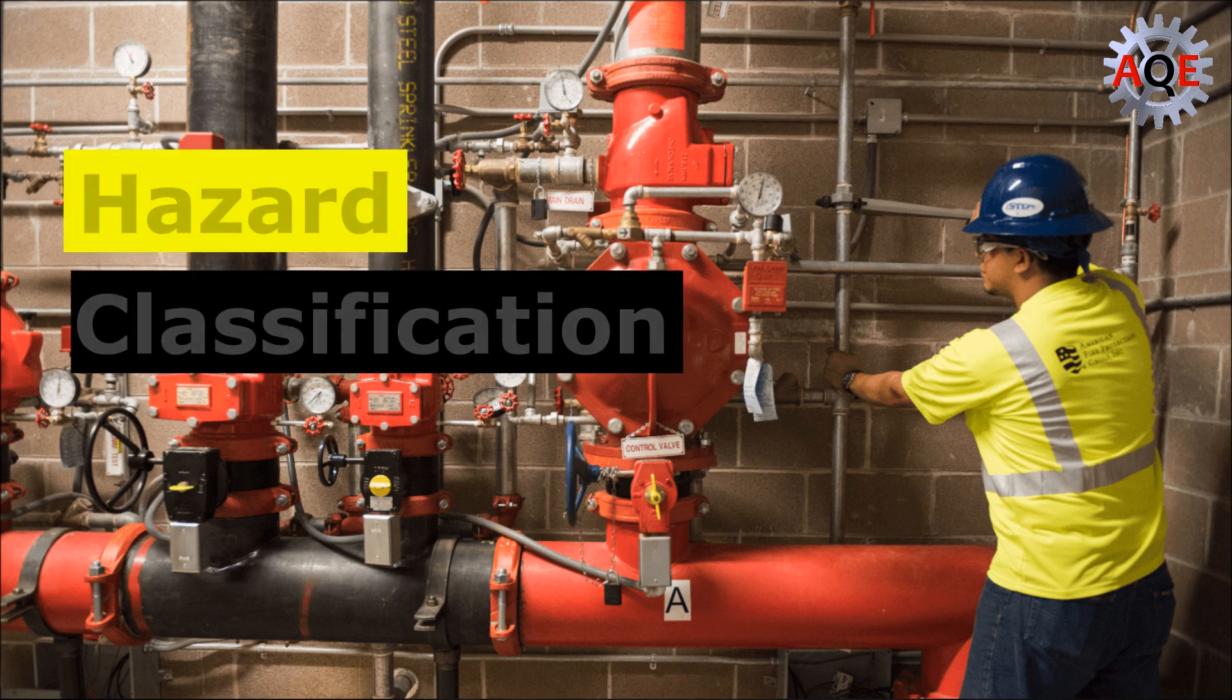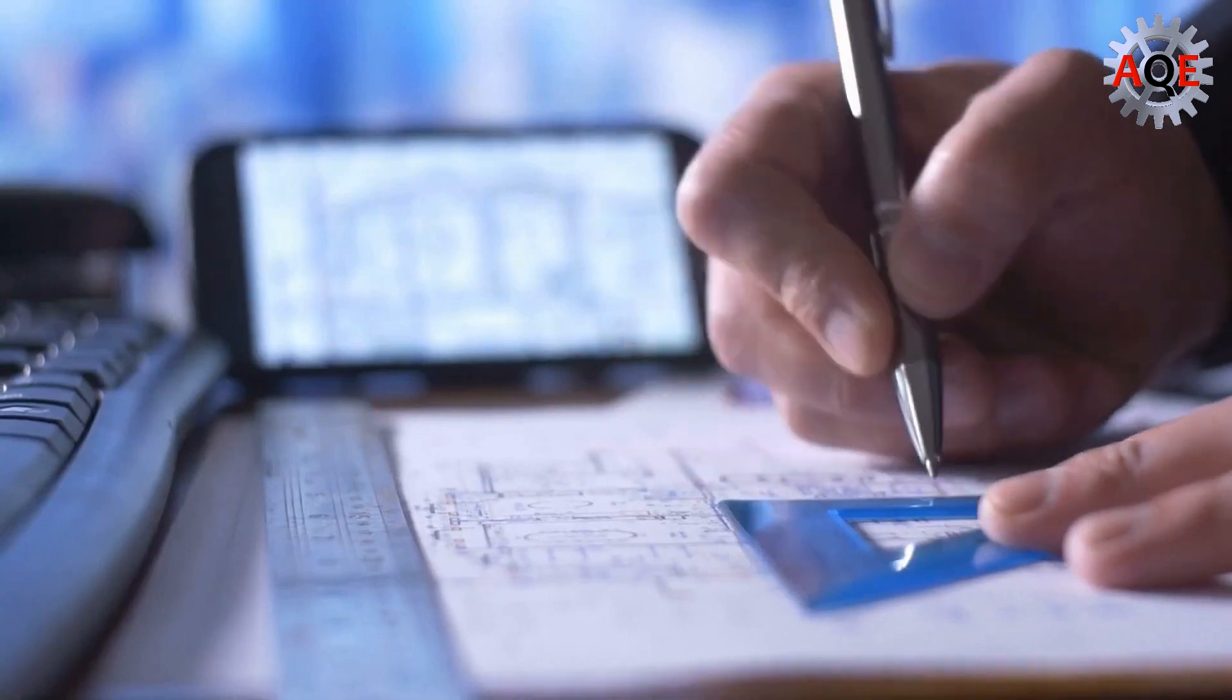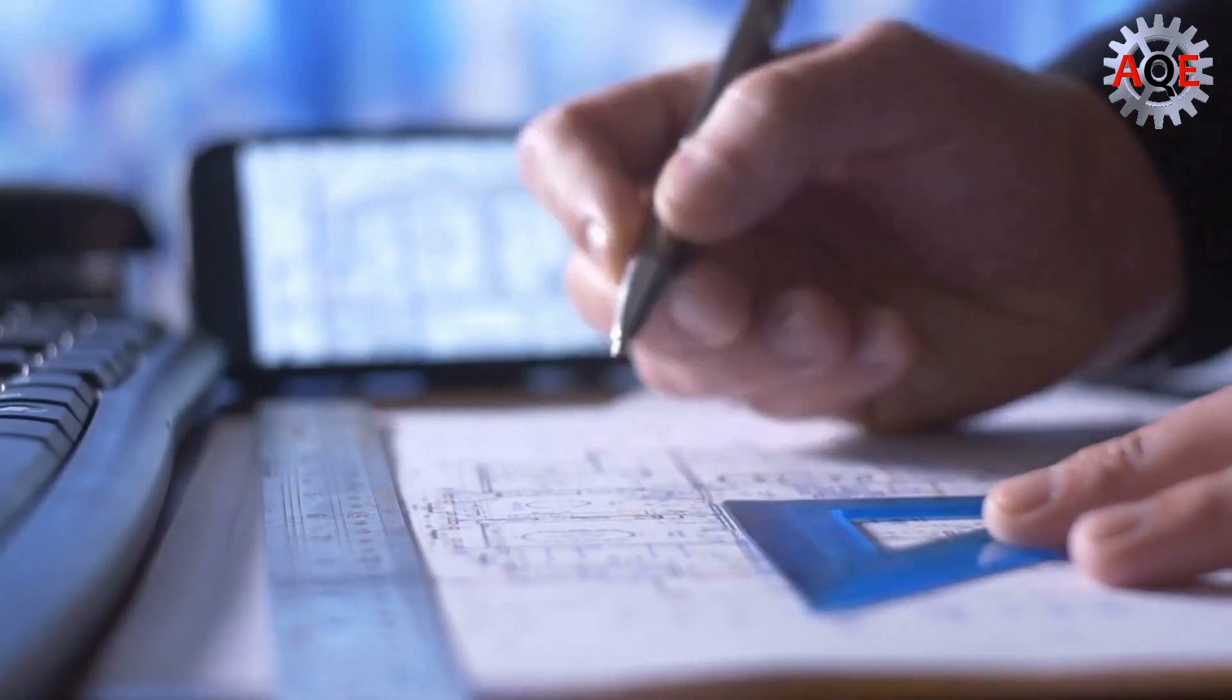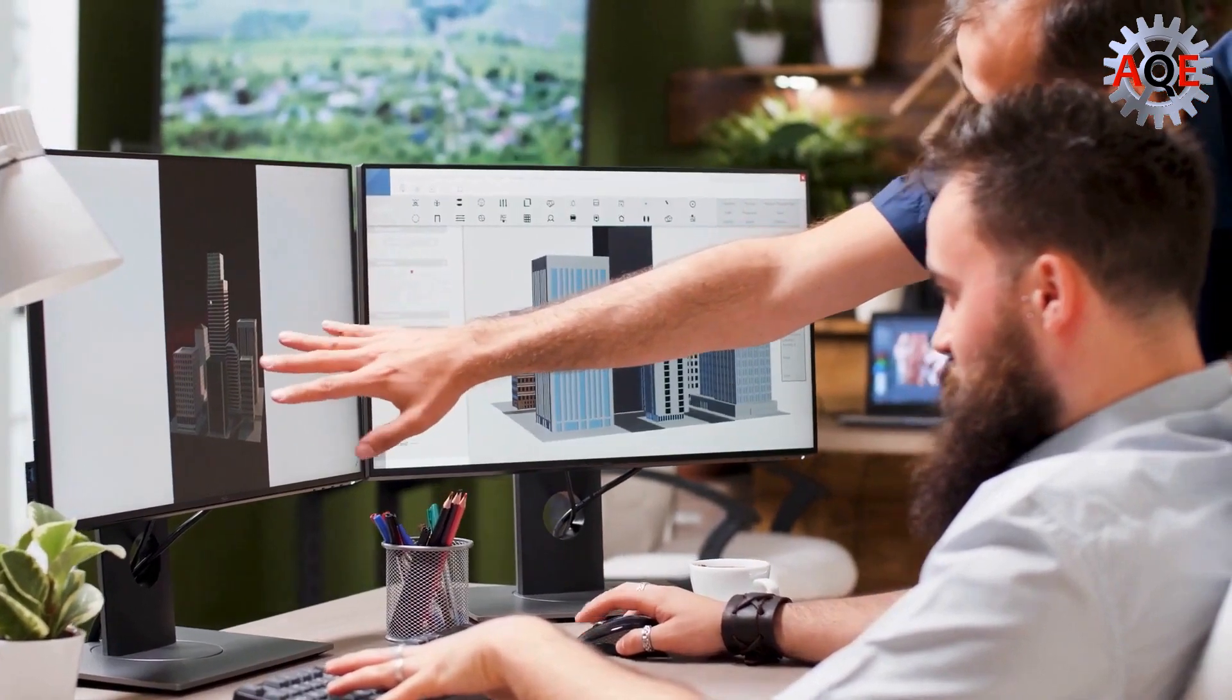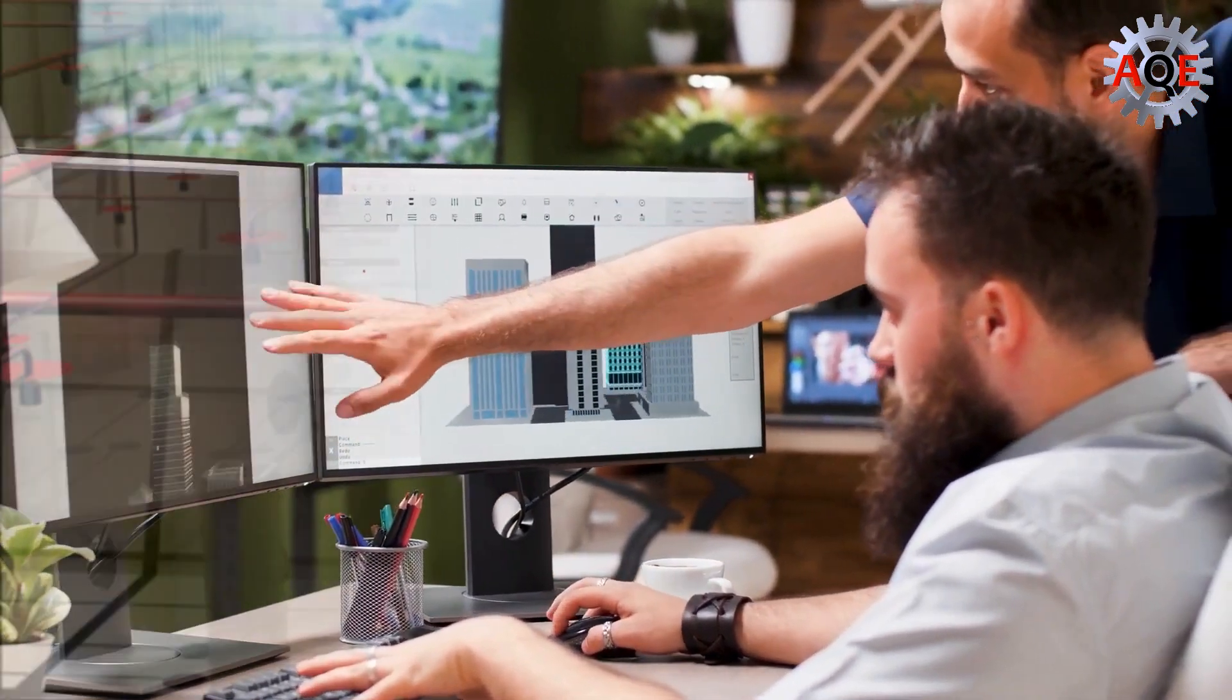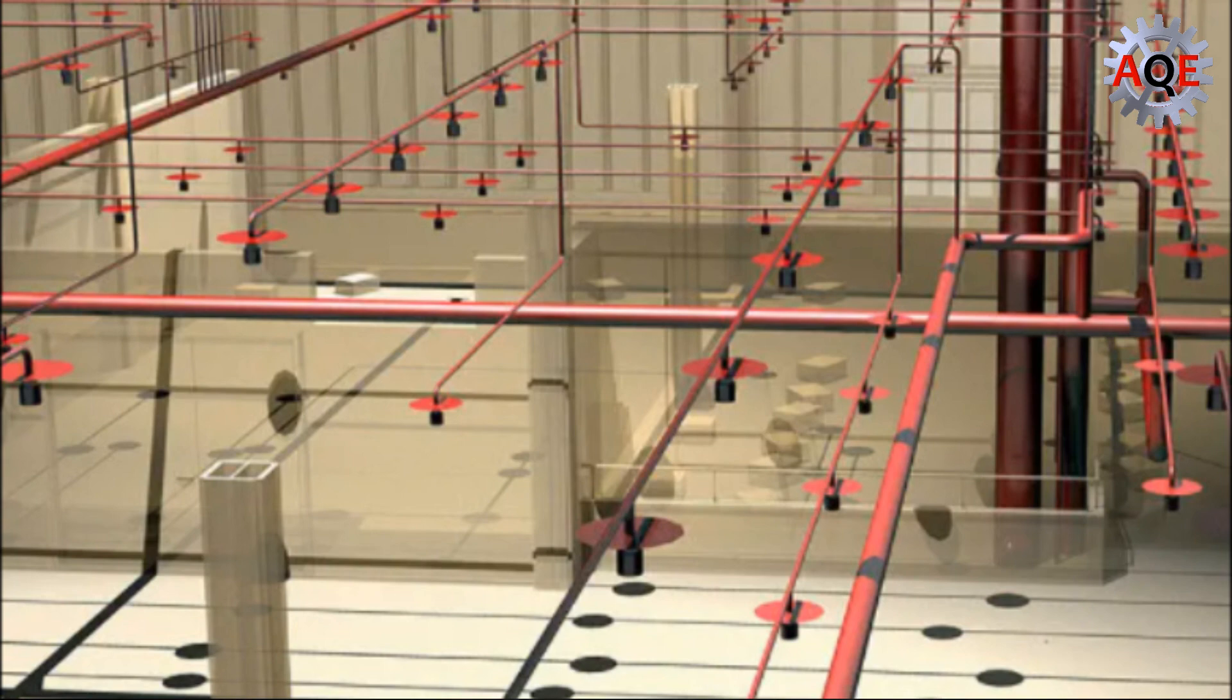Fire protection systems fall into a range of hazard categories or class. The fire protection hazard classification used in designing a sprinkler system has to be determined before the design work starts. This will aid in determining the traits of the fire sprinkler installation.